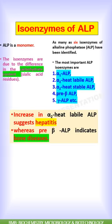ALP is a monomer. The isoenzymes of ALP are due to differences in carbohydrate content, mainly sialic acid residues. As many as six isoenzymes have been identified, including alpha-1 ALP, alpha-2 heat-labile ALP, alpha-2 heat-stable ALP, pre-beta ALP, and gamma ALP.